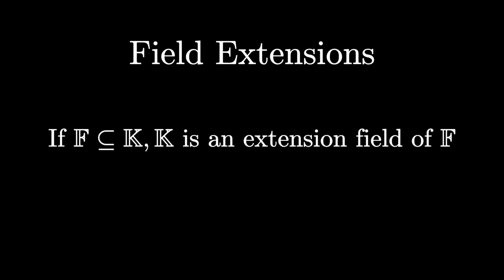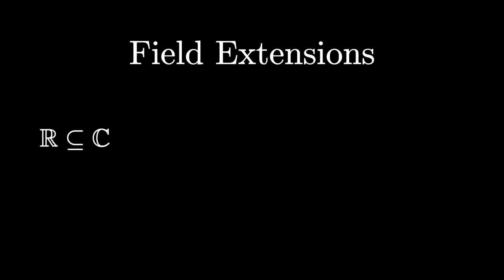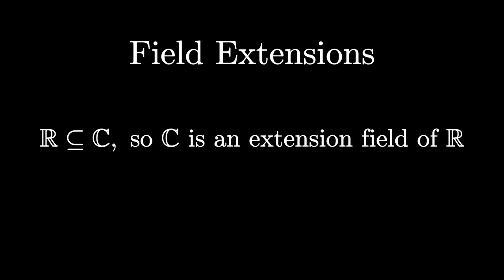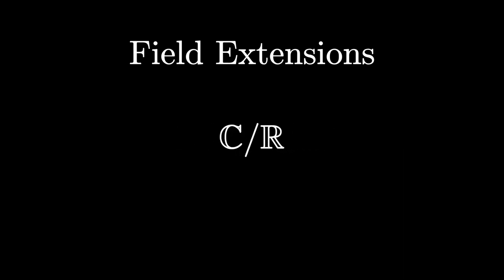Now, a field can be extended, and these are called field extensions. Essentially, if all the elements of one field are a subset of another, then we say that the latter is an extension field of the former. For example, the reals are obviously a subset of the complex numbers, meaning that every real number is also a complex number. Since they're both fields, the field of complex numbers is an extension field of the field of real numbers, and we denote it like this. Now, we can define functions between fields, formally called homomorphisms, meaning that we can map elements of one element to another. In the case of the field of real numbers, these functions are just the usual real-valued functions we're familiar with, like x squared or the sine of x.